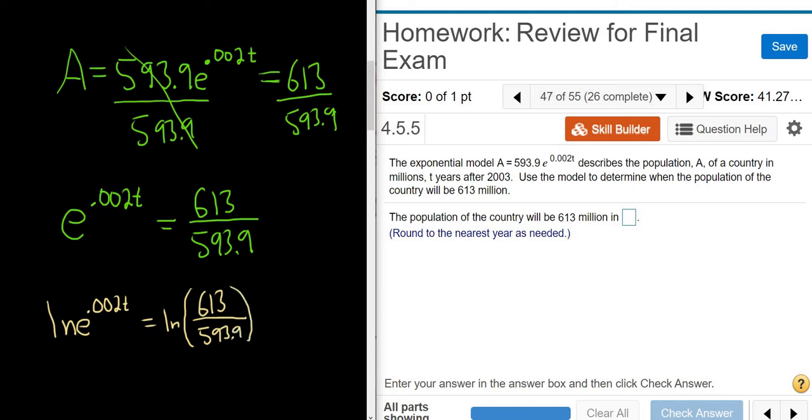And what happens is that the ln and the e cancel. So you just get .002t equals the natural log of 613 over 593.9. And this is an important rule from math. It's ln e to the x is x. Whenever you have the natural log of e to the x, you just get x. It's like the ln and the e cancel, and so you just get the exponent. That's how you get rid of exponentials like that.